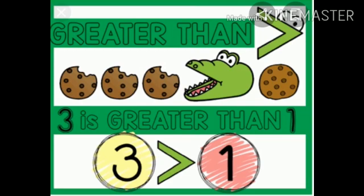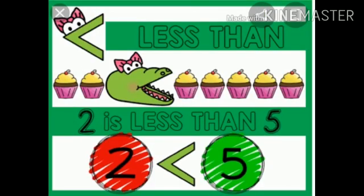Between three nuts and one nut, Croco will open his mouth to eat three nuts. So we will put here greater than sign and we will say three is greater than one. As you can see in the picture,